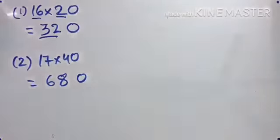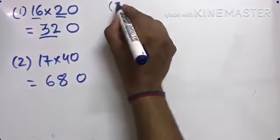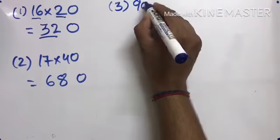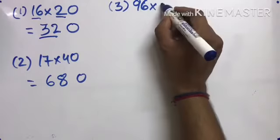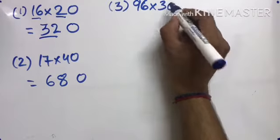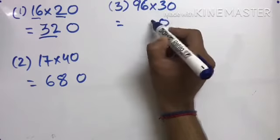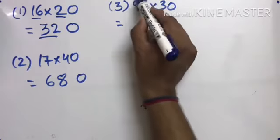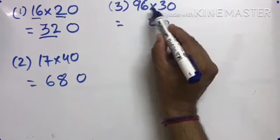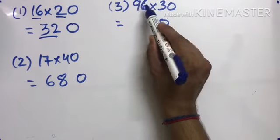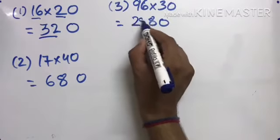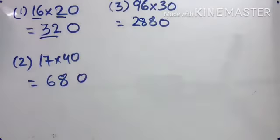Same thing. We can do this with other numbers too. For example, 96 multiplied by 30. One zero. 3 times 6 is 18, carry 1. 3 times 9 is 27 plus 1 is 28. 2880. This is the direct method; the sum gets done in this way.